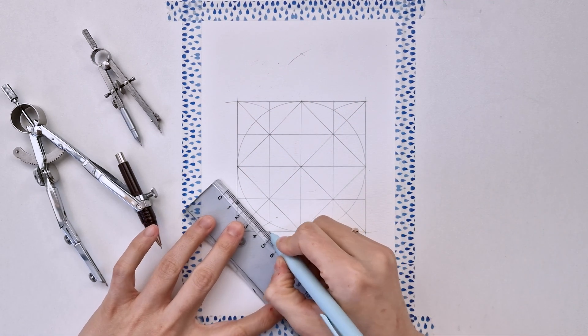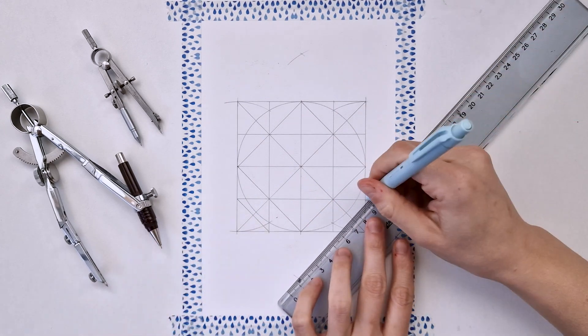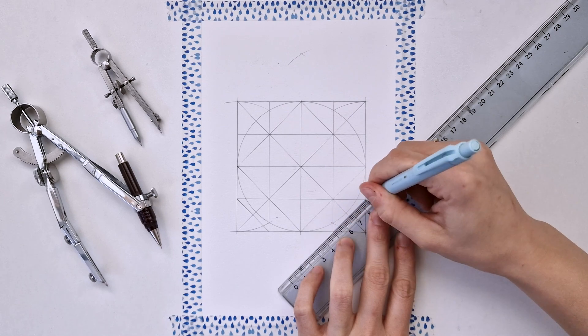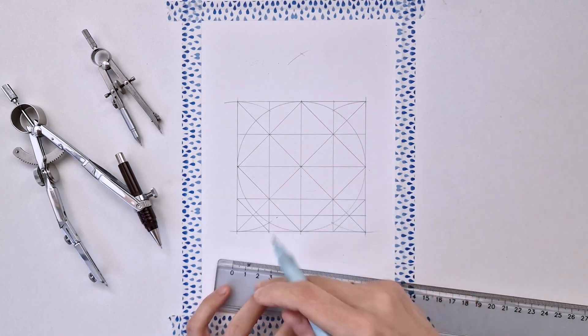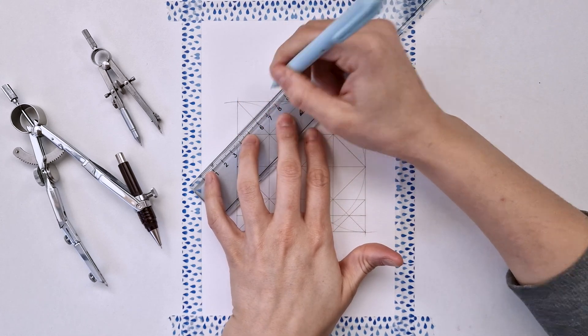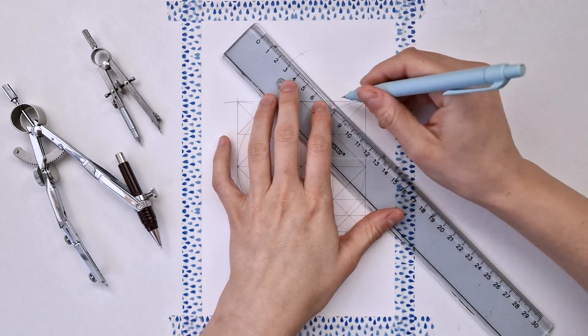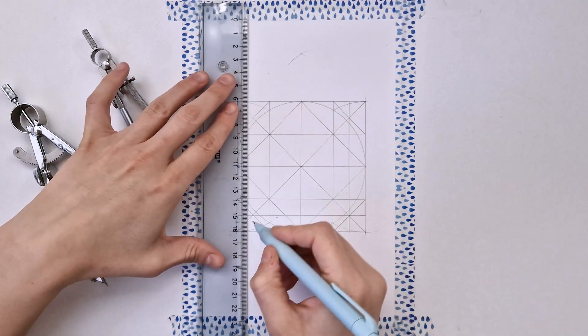And just like that you just keep adding diagonals inside each mini square and connecting opposite points. You can divide the big square into eight per eight which is 64 tiny squares.